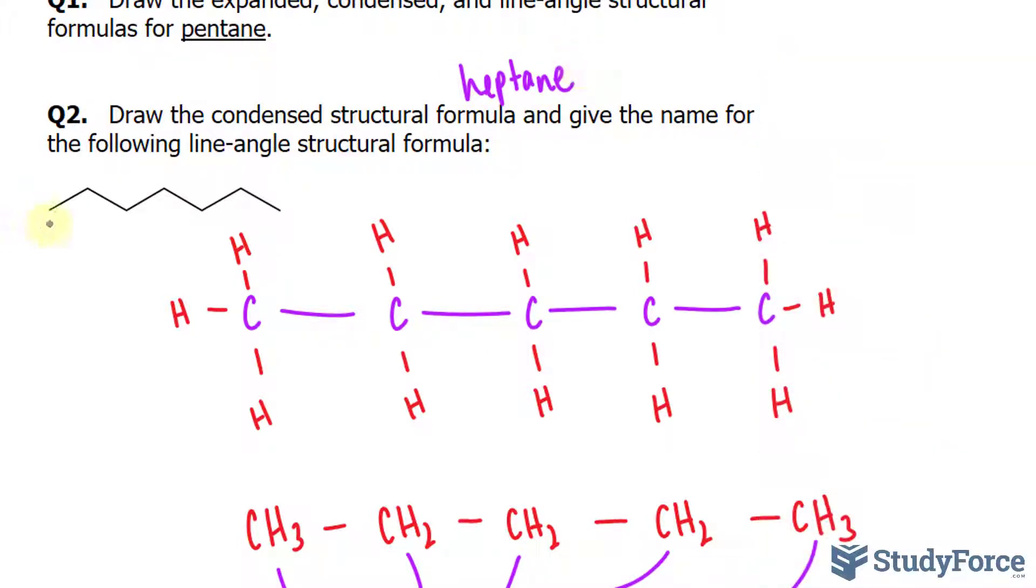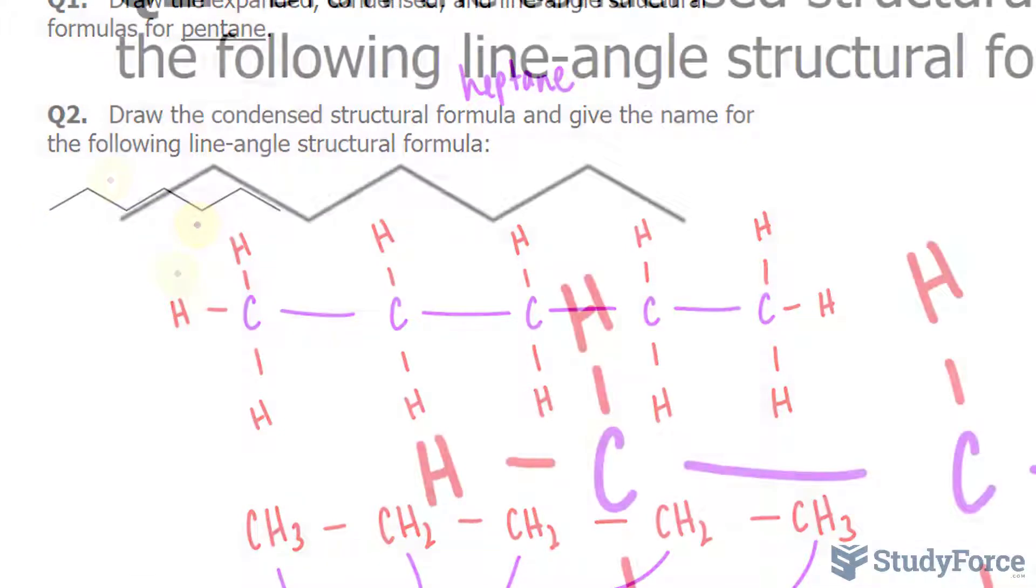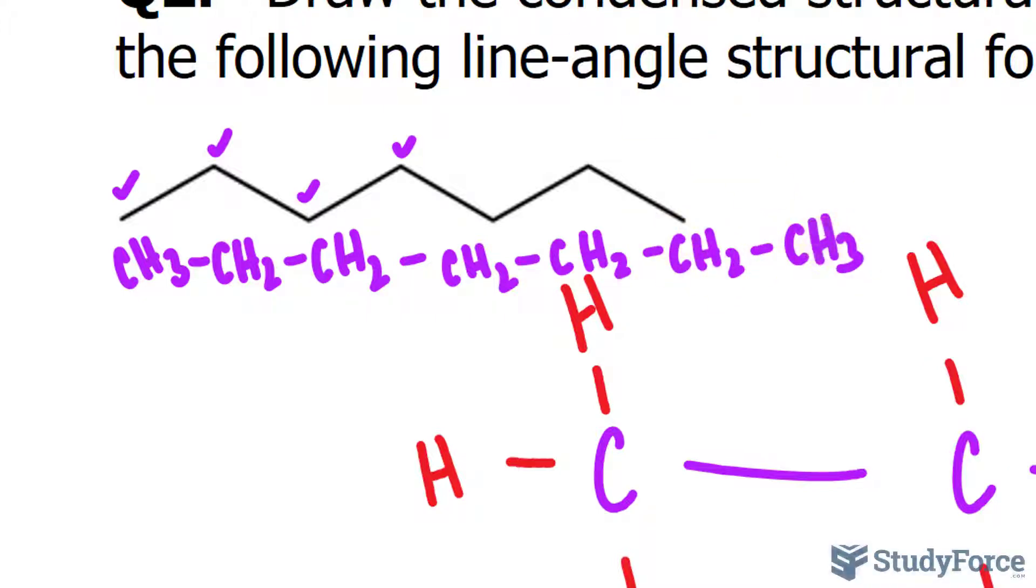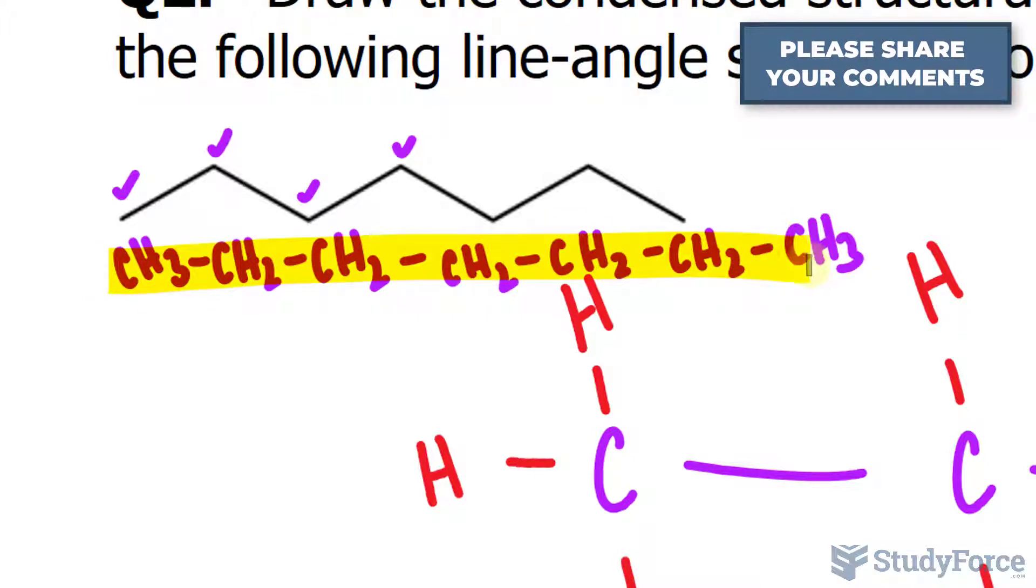The condensed structure, and I'll use the following. This is CH3, CH2, so that, that. Now we're on to this. CH2, CH2, CH2, another one. And we end off with a CH3. That right there is the condensed structure.